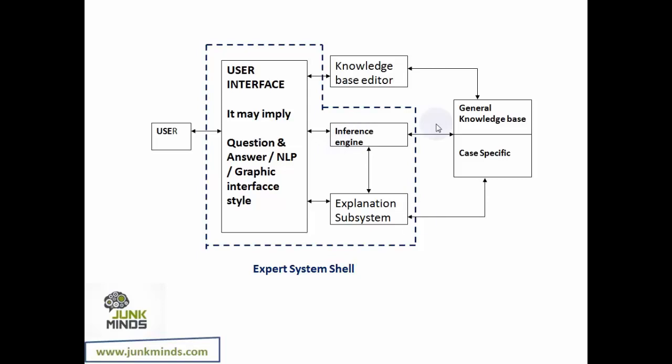The system also has an explanation subsystem. When you give a solution to the end user, the user may want to know the reasoning — how did the system arrive at that particular solution or why is it the right solution? The explanation subsystem gives the user details about how exactly they arrived at that solution or why it is the best possible solution to the question given.